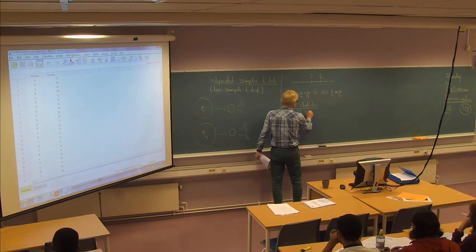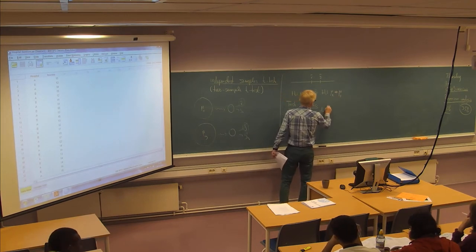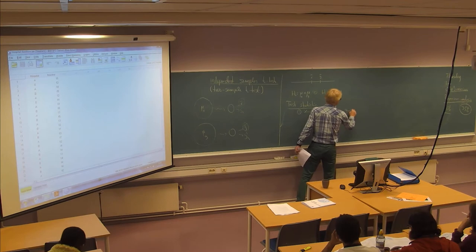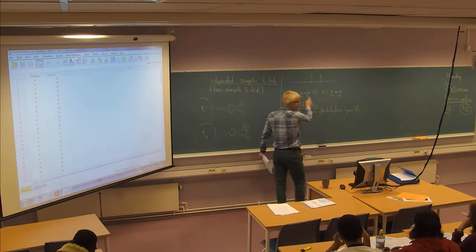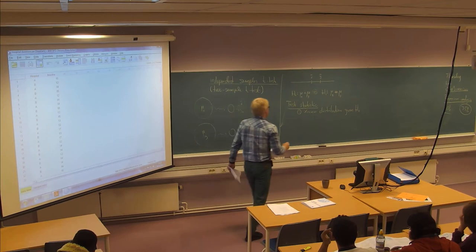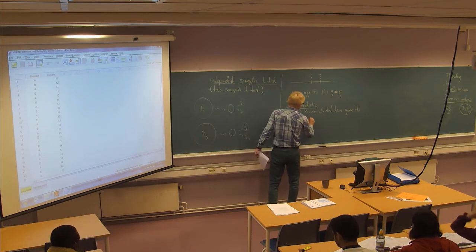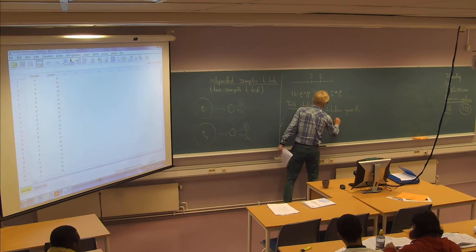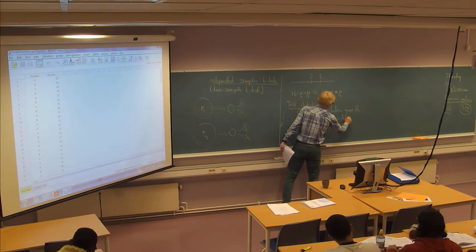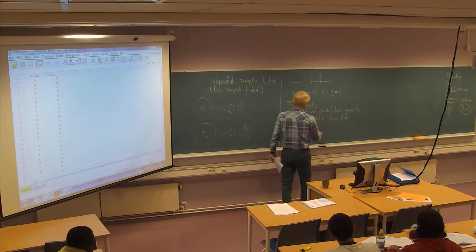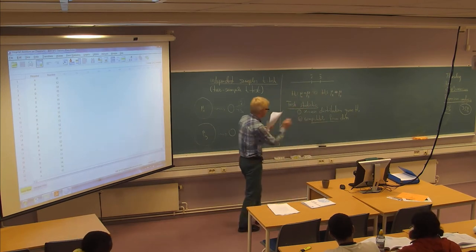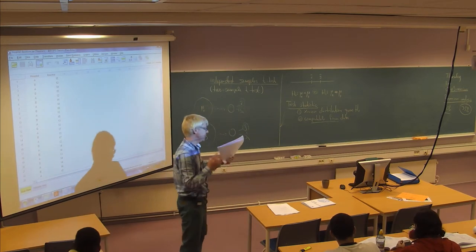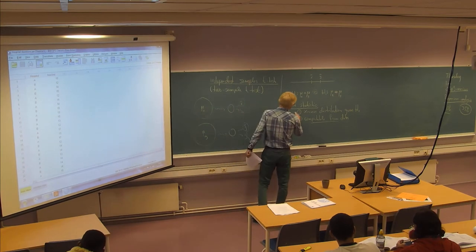So it has two features. It must have a known distribution given the truth of H0. And secondly, it must be computable from data, or from the samples. So it should have a known distribution and then we should be able to compute some value from the sample, which we can then compare to this given distribution under H0.